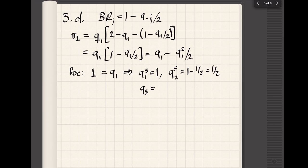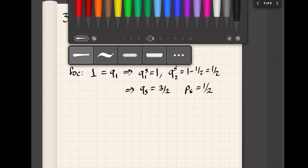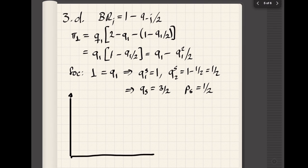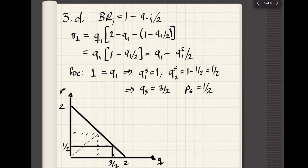Plugging that into the best response function tells us that the follower wants to produce one half, for a total production of three halves. Going back to the inverse demand function, it means that the market price is going to be two minus three halves, which is equal to one half. So we're in good shape, we can draw a graph. The profit in this case is going to be one half times three halves, and the consumer surplus is going to be three halves times two minus one half, which is three halves divided by two. So we get a total of nine eighths plus three fourths, which is six eighths, for a total of fifteen over eight.